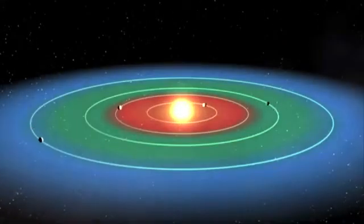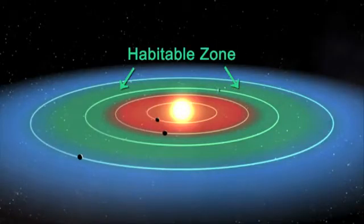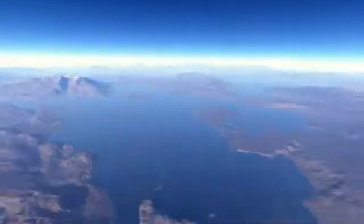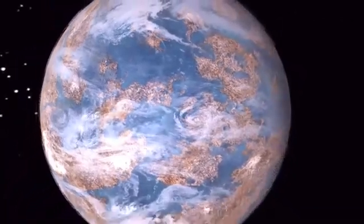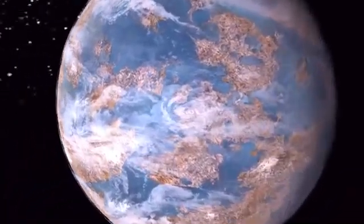Among the 1,100 planet candidates, the Kepler science team has found 54 that are orbiting in their star's habitable zone, a region where liquid water could exist on the surface of a planet. Five of those candidates are near-Earth size, and the other 49 range in size from twice the size of the Earth to larger than Jupiter.